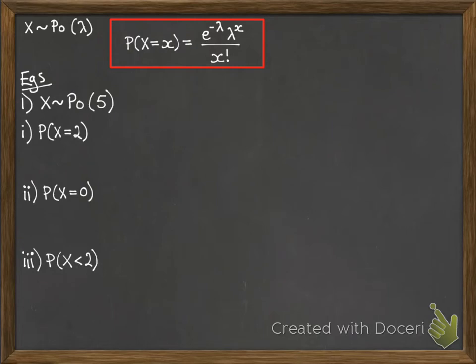Let's see some examples then. So here we have x following a Poisson distribution with lambda 5. We want to find the probability that x equals 2, so we pop it into our formula. So e to the minus 5, since lambda is 5, 5 to the power of 2, lambda is 5 and x is 2, and all over 2 factorial. Put it in your calculator and away you go.